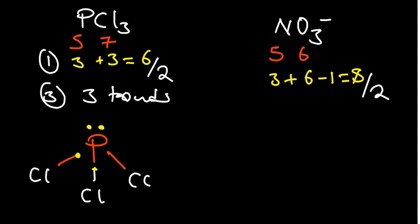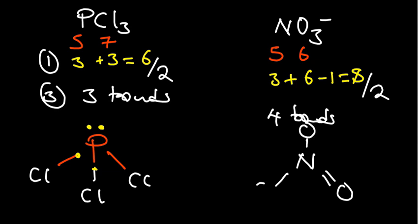Step two: divide by two to determine the number of bonds — eight divided by two gives four bonds. Our central atom is nitrogen with three oxygen atoms. One oxygen gets a double bond and the other two get single bonds. All of nitrogen's five valence electrons are used up in bond formation.